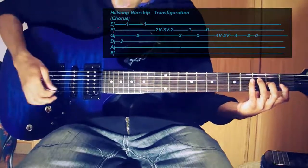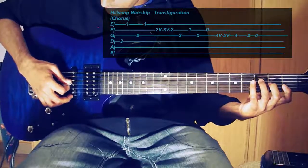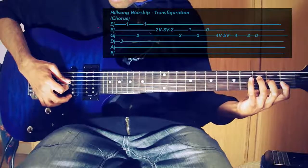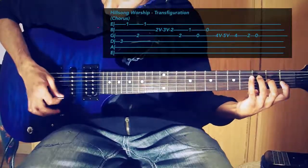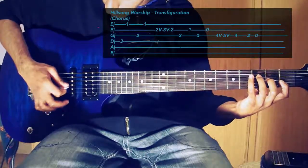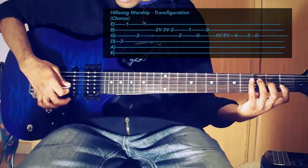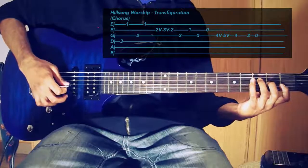So you are going to start by picking the D string and the E string like so. Then from there you are going to pick the G string and the E string.